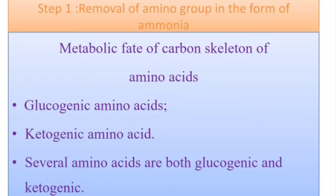Now coming to the first step of ammonia metabolism — why is ammonia formed? In order to utilize any amino acid as a precursor for the synthesis of glucose, fats, or both — that is glucogenic, ketogenic, and glucogenic and ketogenic — the first step is to remove the alpha amino group in the form of ammonia. Then only the remaining part of the amino acid without the amino group, called the carbon skeleton, can be used as a precursor for the synthesis of carbohydrates, fats, or both.